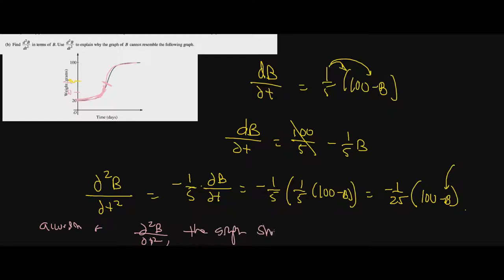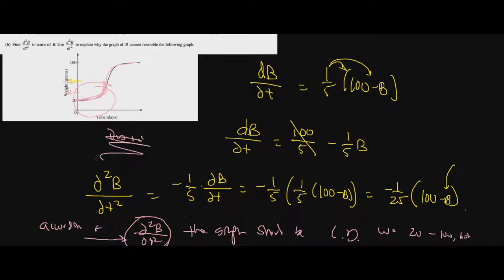According to our second derivative, the graph should be concave down from b = 20 to b = 100. But the given graph has a portion that is concave up, which does not make sense and contradicts what the second derivative tells us.